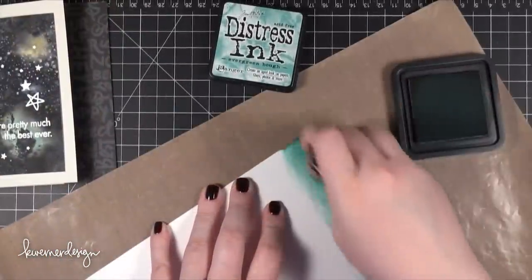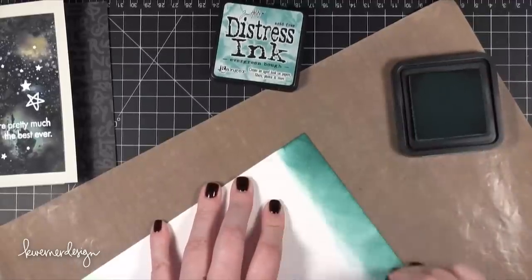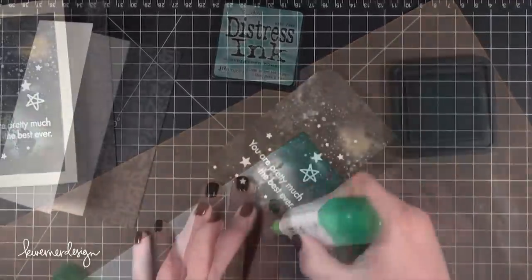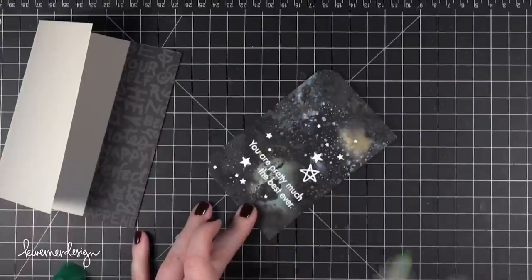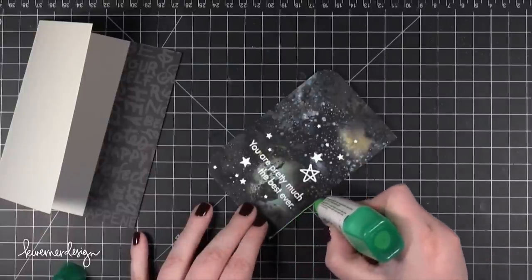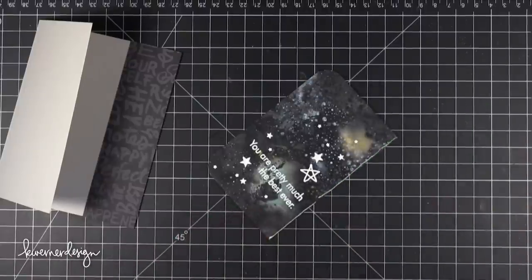I wanted to add a little strip of color and I wanted it to sort of match the green tones that are in the galaxy. So I took Evergreen Bough Distress ink, which is like the Distress paint color, and I sponged that onto some cardstock. Then I cut a really itty bitty strip and I'm adhering it to the edge of that galaxy paper.